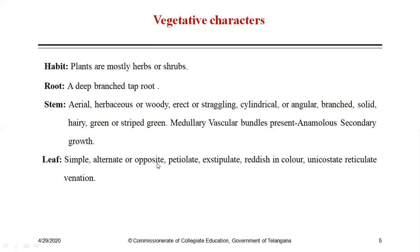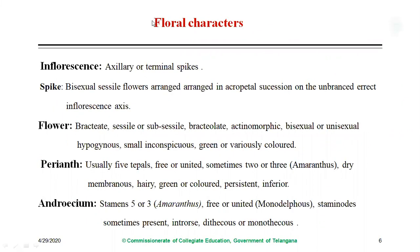The leaf is simple and shows alternate or opposite phyllotaxy. Usually in Amaranthus we find alternate phyllotaxy, whereas in Achyranthes we see opposite decussate phyllotaxy. Leaves are petiolate and stipules are absent — exstipulate. Leaves are usually green or reddish colored with unicostate reticulate venation.